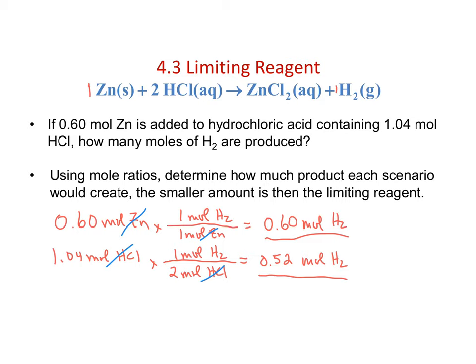Does this make sense? From the balanced equation, for every one mole of zinc I need two moles of HCl. Starting with 0.6 moles of zinc, I'd need approximately 1.2 moles of HCl to consume all the zinc. Since we only have 1.04 moles of HCl—less than 1.2—HCl is indeed the limiting reagent. This confirms the one-to-two molar ratio of Zn to HCl in the balanced equation.